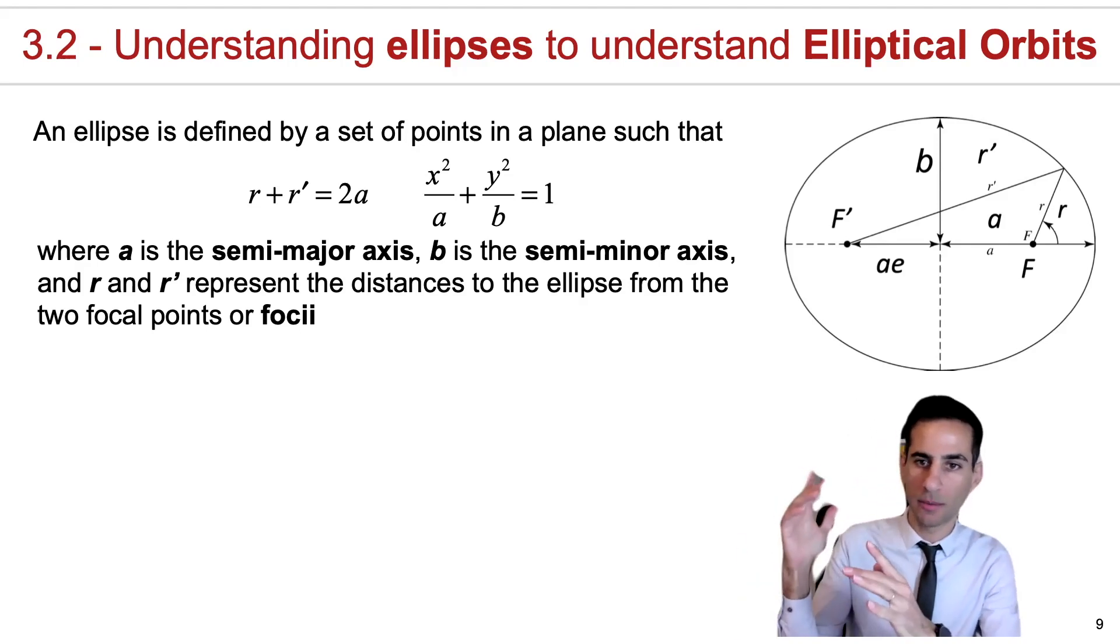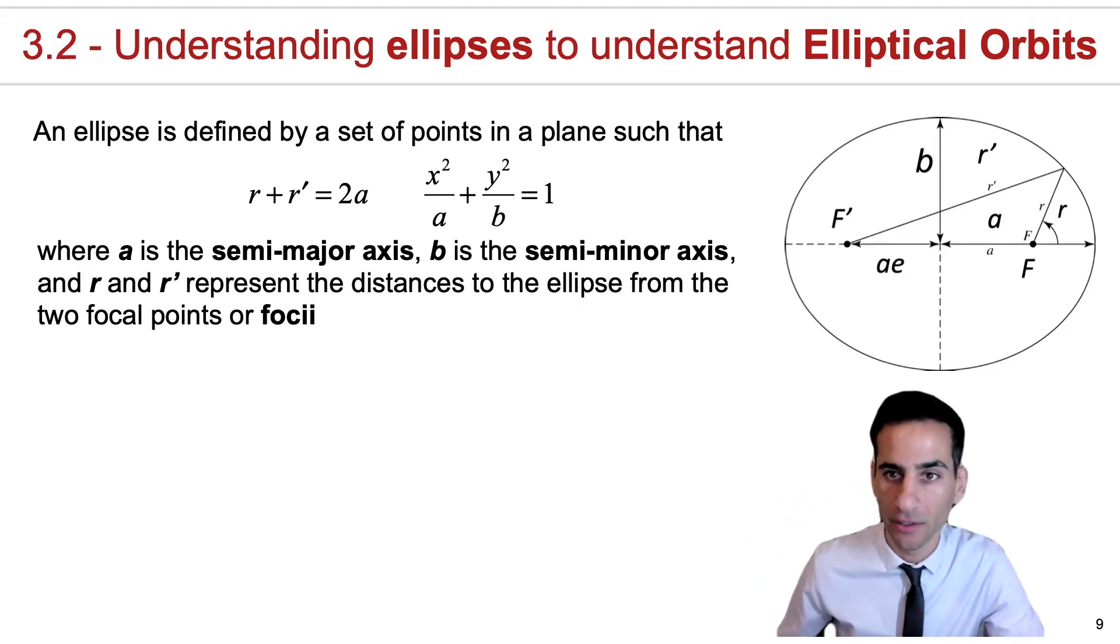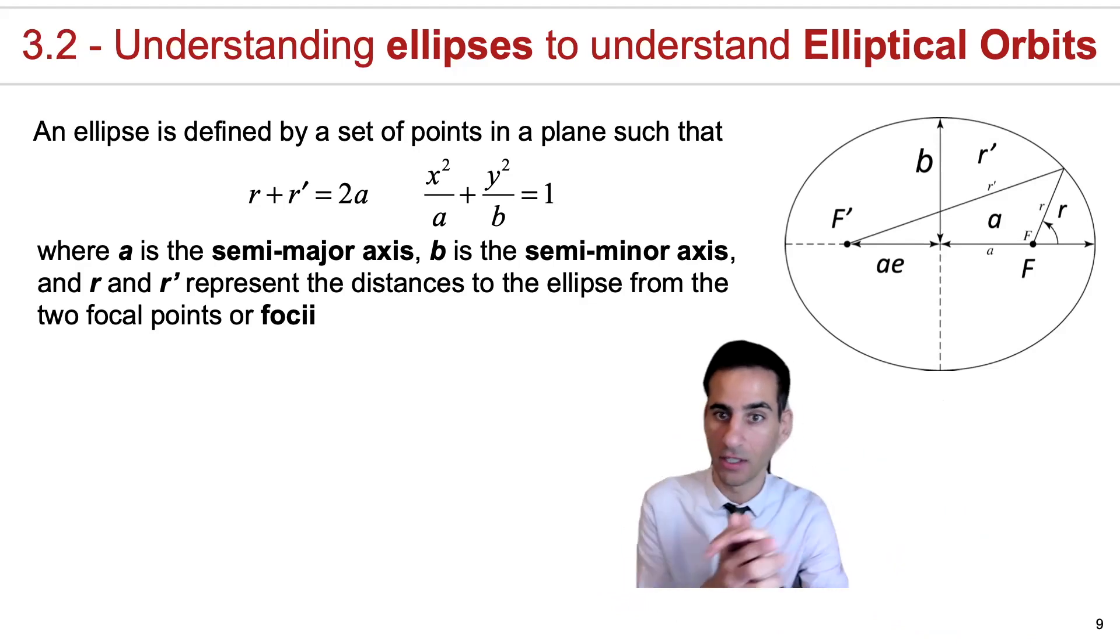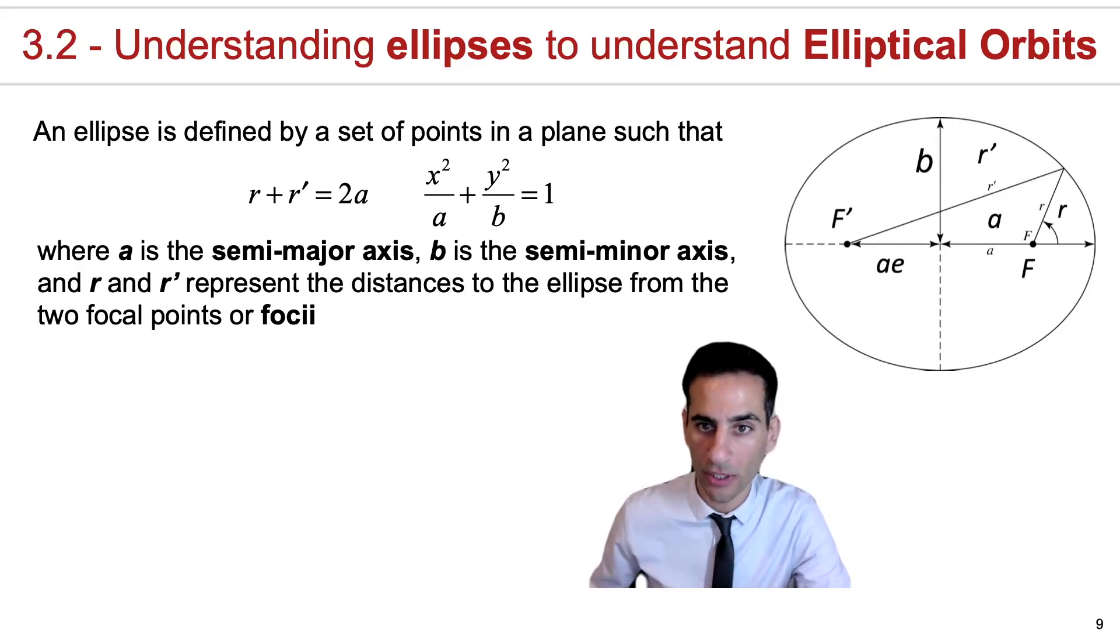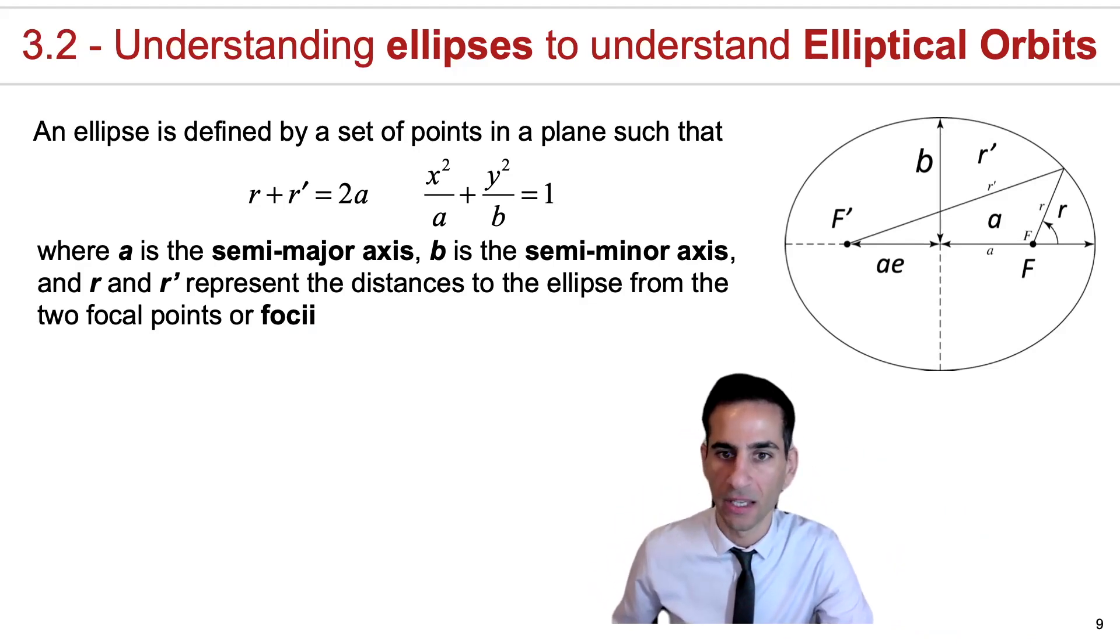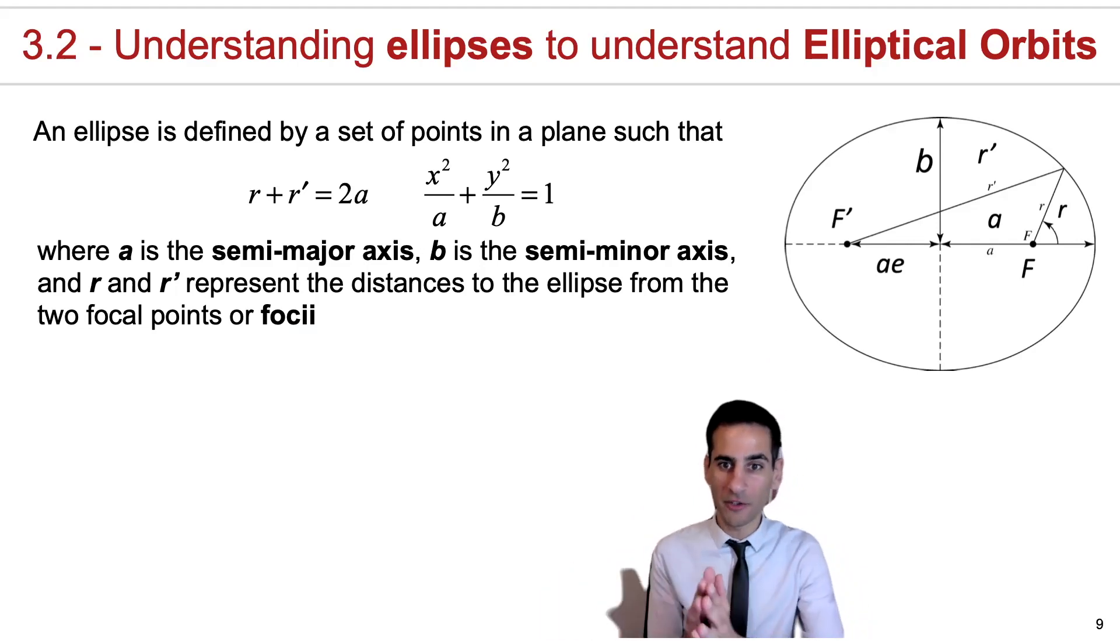In general, orbits will look like ellipses, especially the orbits of planets in the solar system. They will look like ellipses and many of you should be familiar with ellipses. There's different ways...